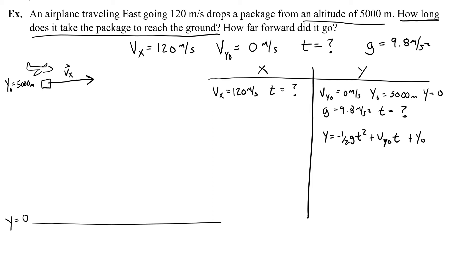Now I start getting rid of anything that is 0. I know that the final height is 0, so that goes away, and I know that the initial velocity is 0, so that goes away. And what I'm left with is 0 equals negative 1 half gt squared plus y0, which if I add 1 half gt squared to both sides, I get 1 half gt squared equals y0. And to solve for t, I would multiply both sides by 2, and that would get rid of the 1 half. Then I would divide both sides by g, which would get rid of the g.